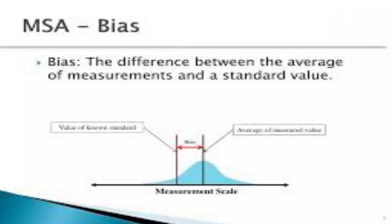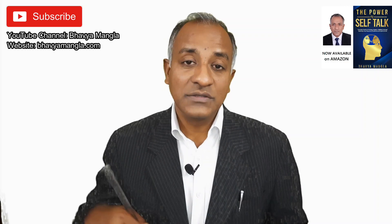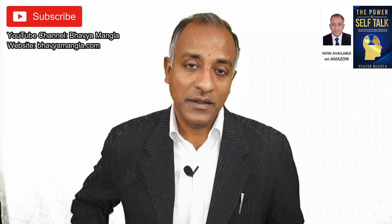In summary, bias is about the average of the measurement system compared with a reference value — the gap that comes is called bias. When we talk about linearity, we look at the operating range, say from 5 to 15, and see what bias occurs over that range — that is called linearity.